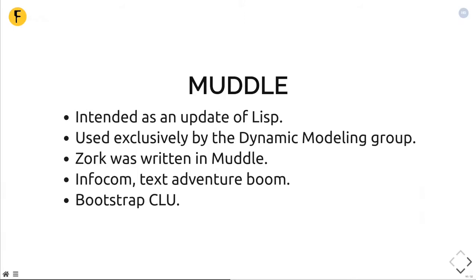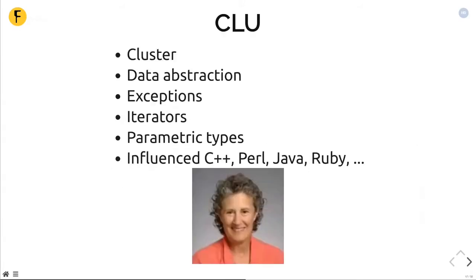MDL was also used to bootstrap the next computer language called CLU. CLU is short for cluster, which really means class or something like that. This is a very influential programming language which few people have heard about. But if you ask the people who made C++, Perl, or Ruby, they will tell you they knew about this language and were inspired by it. It was the first programming language to introduce data abstraction in a big way — something we take for granted today but which was quite a new idea at the time. It also has all the things you'd expect from a modern programming language: exceptions, iterators, even parametric types. So it kind of feels like something made in the 1990s, but it was created in the early 70s.